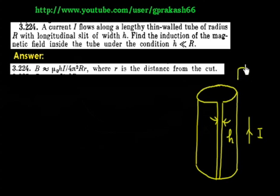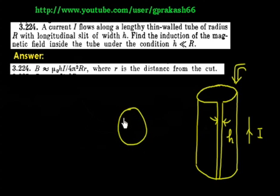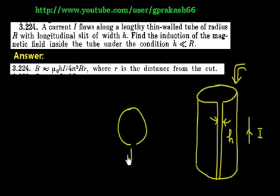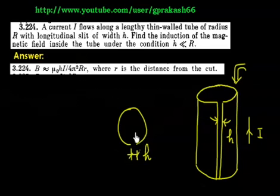If you look from the top, it will look something like this. This is the top view of the cylinder, but there is a slit, so you will see an opening. The width of this opening is h. My task is to calculate the magnetic field inside the cylinder.